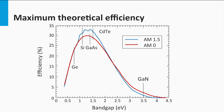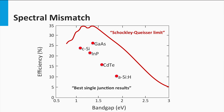For single junction solar cells, semiconductor materials such as silicon, gallium arsenide, and cadmium telluride have an optimum band gap. However, if we look at the record efficiencies of solar cells, they are all below the Shockley-Queisser limit. The reason is that additional optical losses like reflection and parasitic absorption, and electrical losses like Shockley-Reed-Hall and Auger recombination, are not considered. The Shockley-Queisser limit only considers radiative recombination, so its efficiency limit is most valid for direct band gap materials like gallium arsenide, where radiative recombination is the limiting mechanism for open circuit voltage.